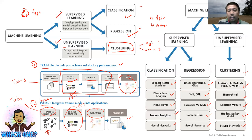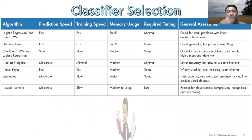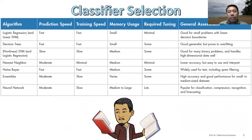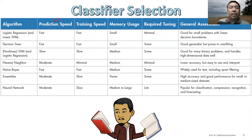The next topic is how to select the classifier. We need to optimize various factors depending on your device — whether you have a high-performing GPU or only an Arduino or Raspberry Pi. You need to trade off between prediction speed and training speed. You can train on a GPU and then do prediction on an Arduino, which will be faster for inference.